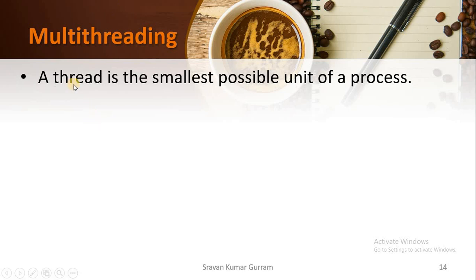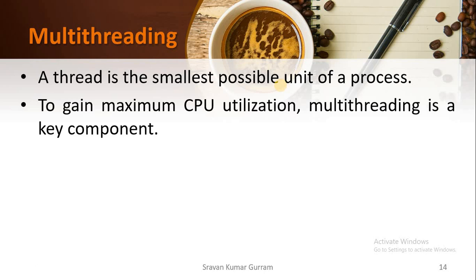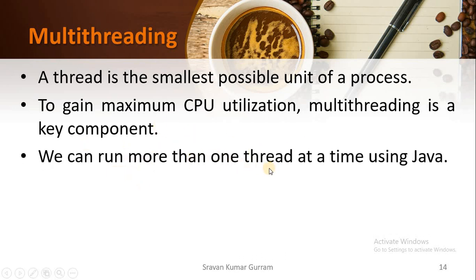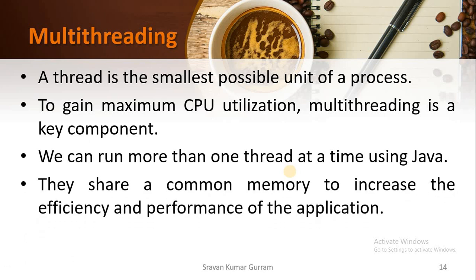Next is multithreading. A program being executed is called a process, and the smallest possible unit in that process is called a thread. To gain maximum CPU utilization, multithreading is a key component. With the help of multithreading, we can use the CPU effectively and run more than one thread at a time. When running multiple threads, they share common memory — no need to allocate separate memory for each thread. We can execute the program with limited memory, and multiple threads can run simultaneously, increasing application performance.